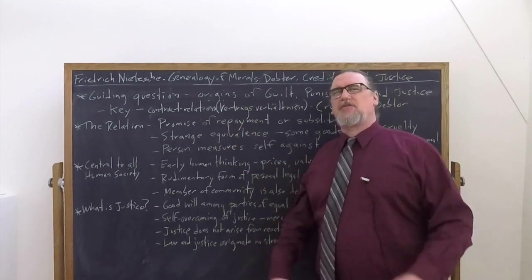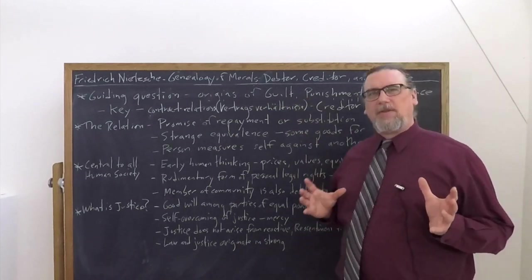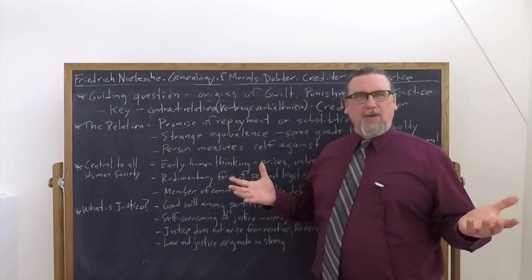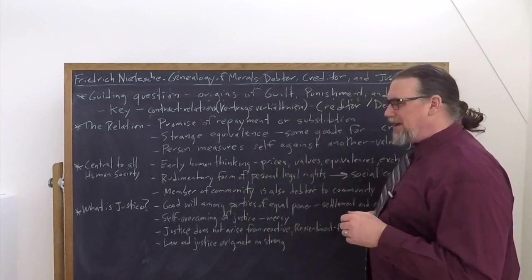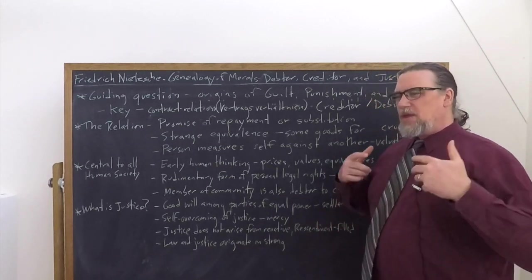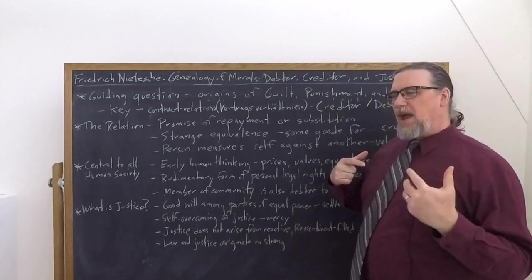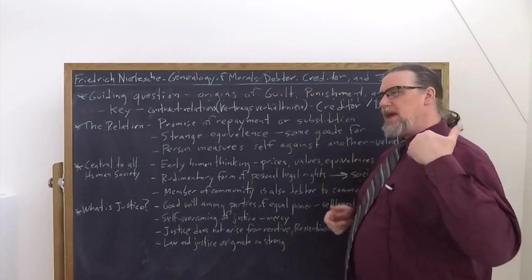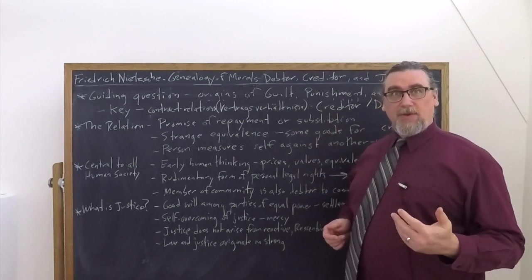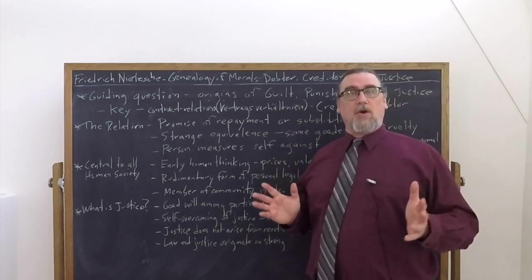So one of the keys to this is what he calls contract relations, vertrags verhältnis. Verhältnis is a relation between things, like father and son is a relation. In Aristotle's categories, he uses that as a prime example, things that are relational are defined or characterized or have their meaning with the other in their connection with the other. So without a creditor, no debtor. Without a debtor, no creditor.